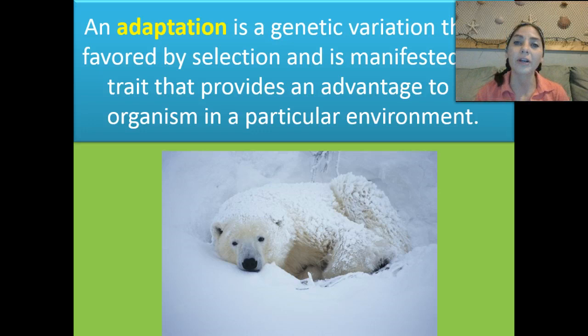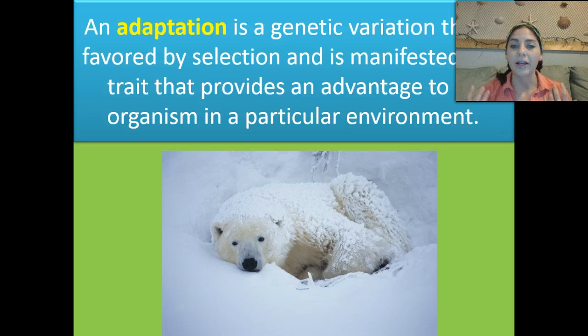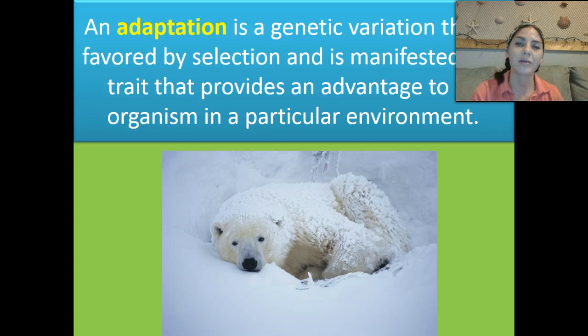We talked about the snowshoe hare and also the desert hare with the very long ears that allow for heat exchange. Those are adaptations those animals have for the environments they live in. Like polar bears — their hair allows them to blend into their environment. Marine mammals have thick layers of blubber which help shield them from the cold. All of those are adaptations that have occurred through genetic variation over time.